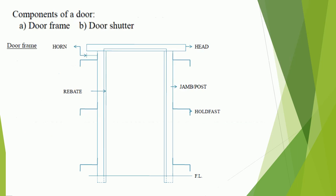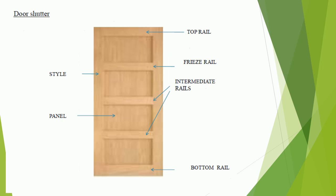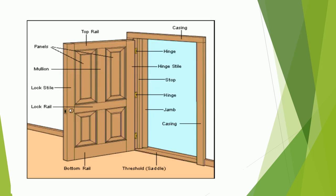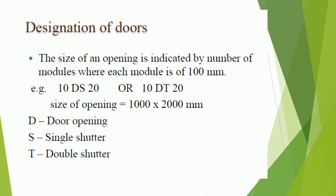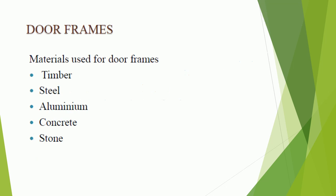The components of door and door frame include the door shutter and the door frame. Materials used for door frames include timber, steel, aluminium, concrete, and stone.